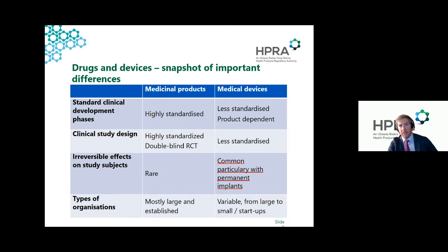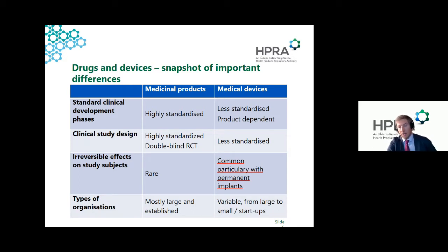From a public health perspective, an important difference is that irreversible effects on study subjects are thankfully rare with medicinal products, but can be quite common with high-risk implantable devices — valves, stents, and similar products — which once placed are often irretrievable. This makes safety oversight very important. Finally, the types of organizations engaged in research can differ: with medicinal products, usually quite large organizations; with medical devices, our ecosystem often includes lots of small or medium-sized enterprises.